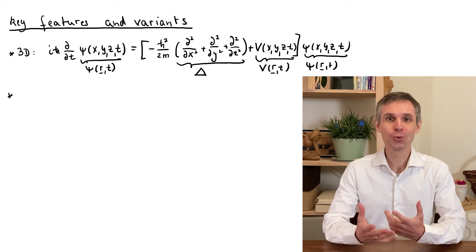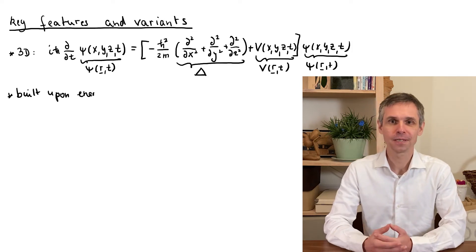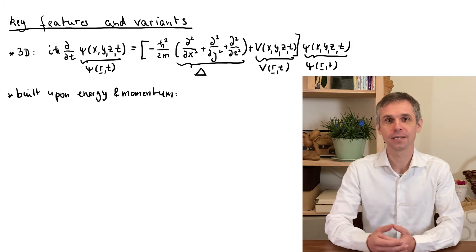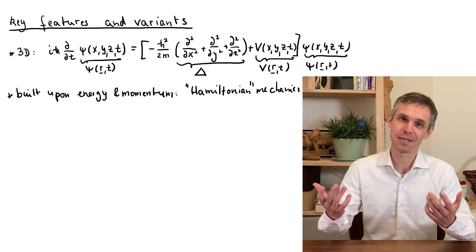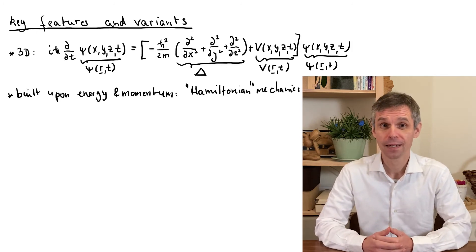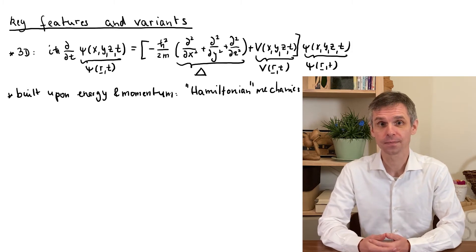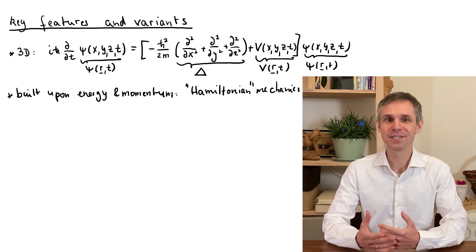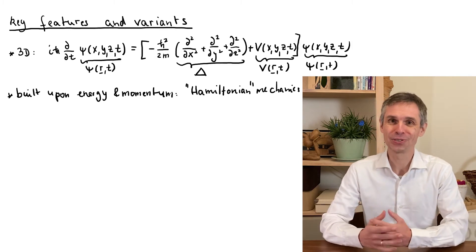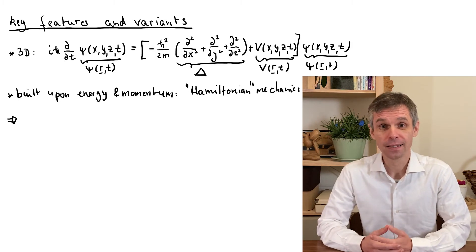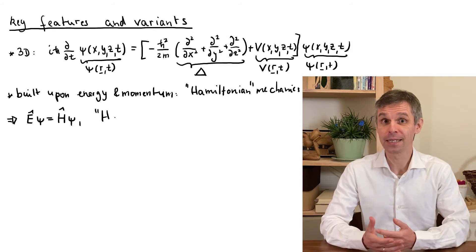But we can go even further. Note that in the motivation of this equation we relied on notions of energy and momentum, therefore on a version of classical mechanics known as Hamiltonian mechanics, in contrast to Newtonian mechanics which relies on the resulting forces. In particular, the sum of the energies on the right-hand side represents the total energy of the particle, which technically is also known as the Hamiltonian. Indeed, the corresponding operator that we encounter here in quantum mechanics is also known as the Hamiltonian.